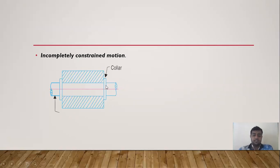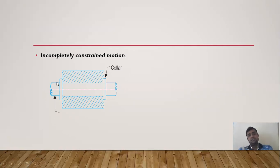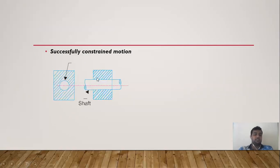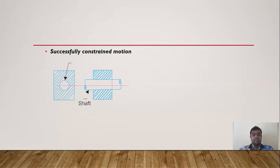Another is incompletely constrained motion, in which the motion between the pair is possible in more than one direction — for example, both sliding and rolling. That is called incompletely constrained motion. Another is successfully constrained motion, where the motion between a pair is converted to completely constrained motion by some other means. An example is a footstep bearing, which involves sliding, rolling, and moving up and down.